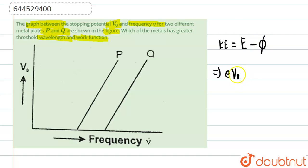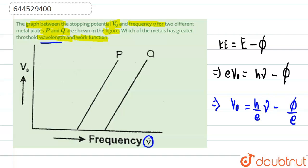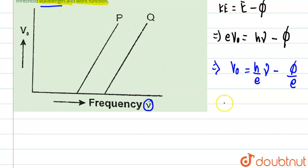So kinetic energy is given as E·V₀, where V₀ is the stopping potential and E is the electronic charge. Therefore: E·V₀ = hν − φ, which gives us V₀ = (h/e)ν − φ/e. This is a straight-line equation in the form y = mx − c, where the intercept is negative.